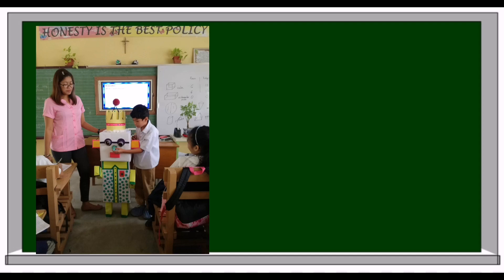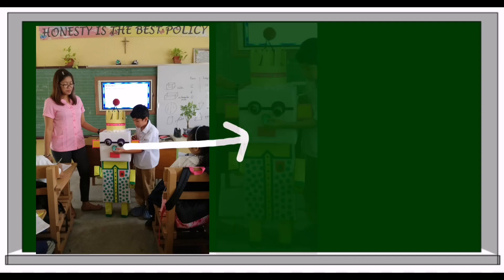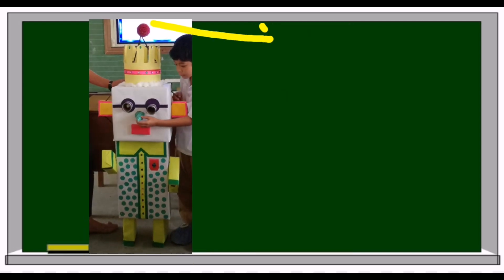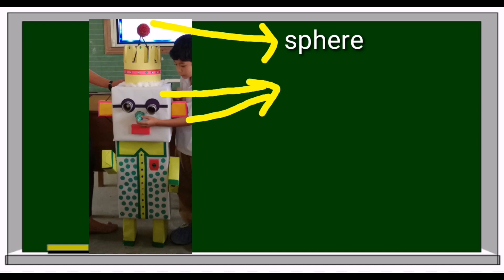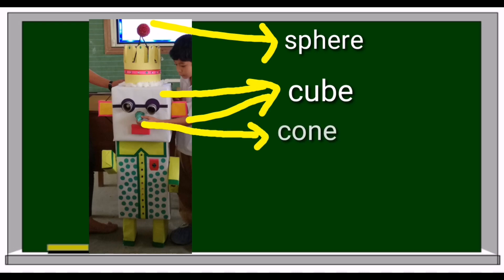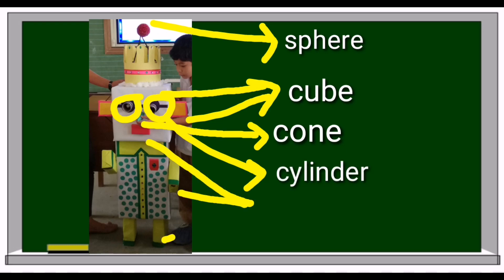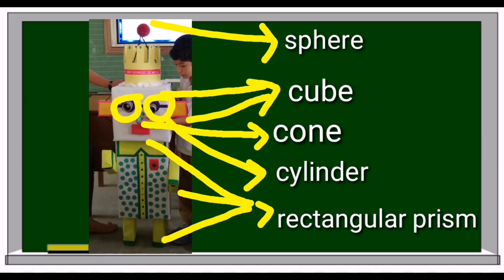This robot is made up of different solid figures. Let's identify the solid figures used. On top of the head of the robot is a sphere. The head and the ears are made up of cube. The nose is a cone. The eyes are made up of cylinder. The mouth, the body, the arms, and the legs are all rectangular prism.